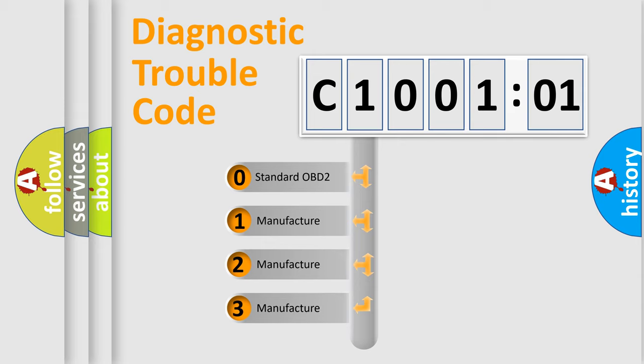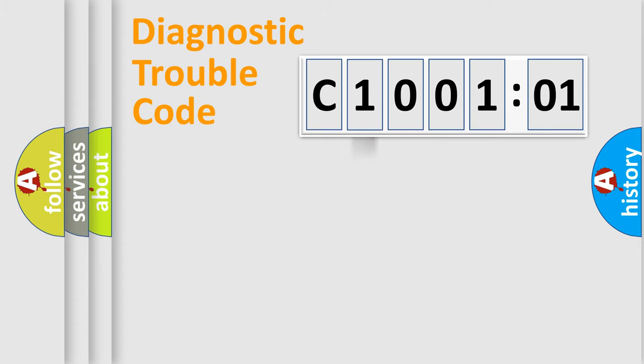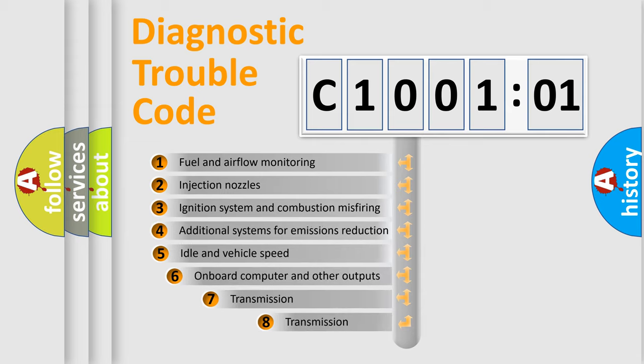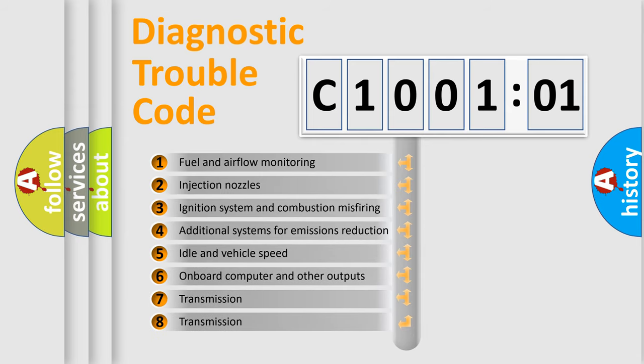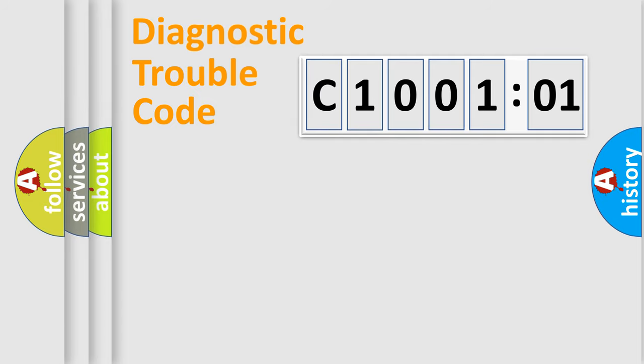If the second character is expressed as zero, it is a standardized error. In the case of numbers 1, 2, or 3, it is a more specific expression of a car-specific error. The third character specifies a subset of errors. The distribution shown is valid only for the standardized DTC code.